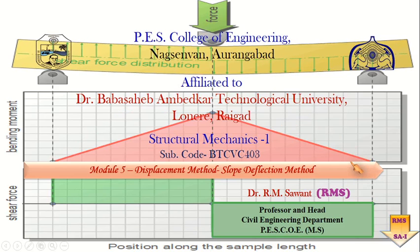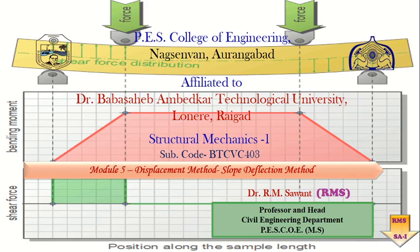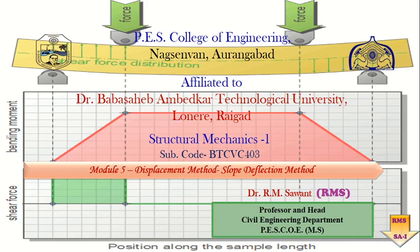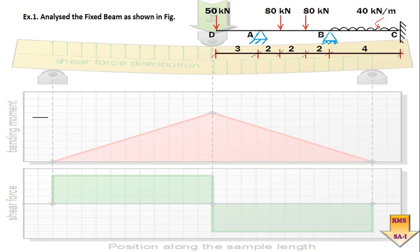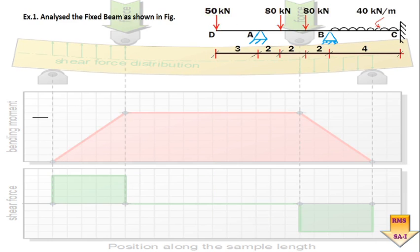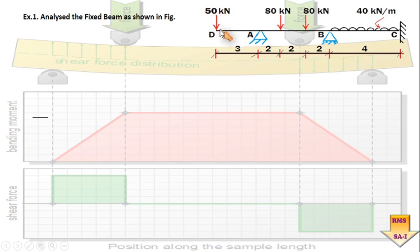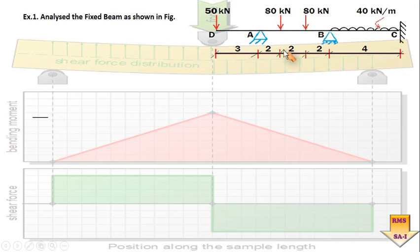Hello dear learners, welcome back to today's video. As we know, we are already dealing with the slope deflection method and trying to understand various numericals by this method. So this is a continuous beam, and on the left hand side there is an overhanging part — the AD part — about which there is a point load at point D. Let us understand how this continuous beam is to be analyzed by the slope deflection method.